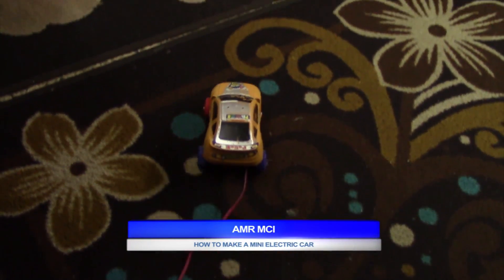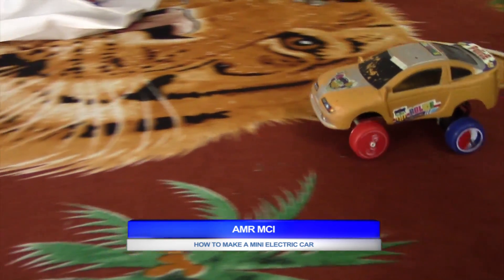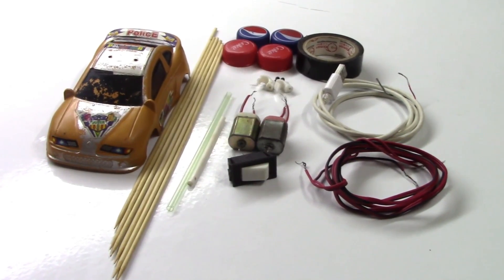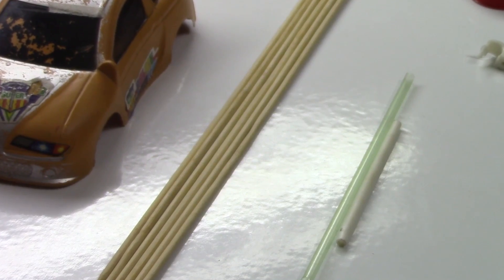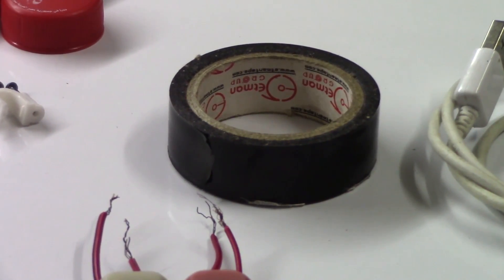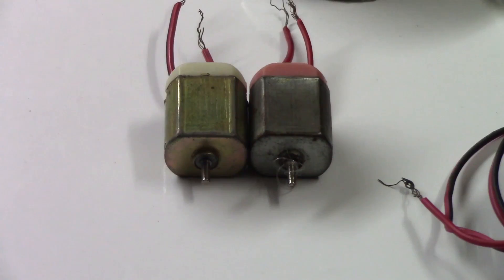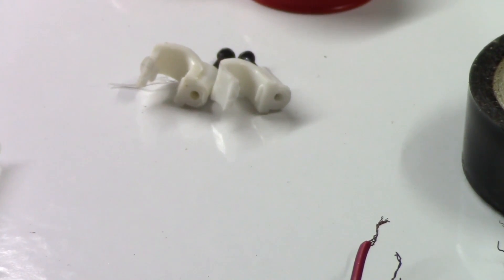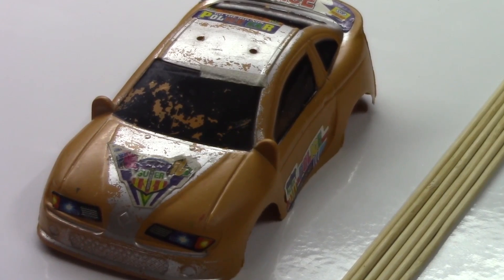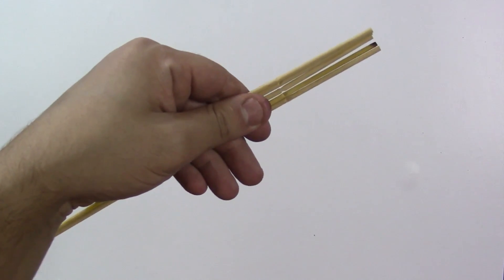Hello everyone, in this video I'm gonna show you how to make a mini electric car powered by a USB cable. To make it you will need five barbecue skewers, a lollipop stick, a straw, electric tape, five bottle caps, two motors, two cable clips, wire, a USB cable, a switch, and a plastic car body.